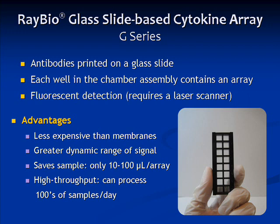The G-Series has several advantages over the C-Series. For one, it's less expensive than the membrane-based arrays. It also has a wider signal range. And it's more economic in terms of sample — only 100 microliters is required per array, while the membrane-based arrays require up to 1 ml. The G-Series is also amenable to high throughput. The slides are very easy to handle, and one can easily process several hundred samples per day.